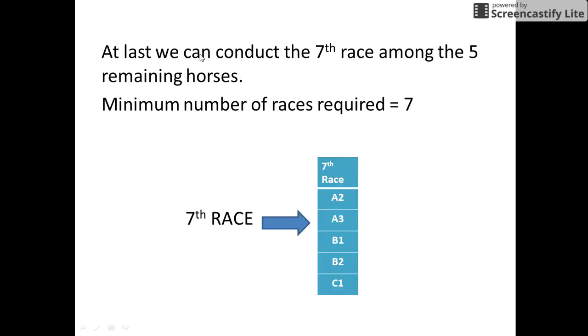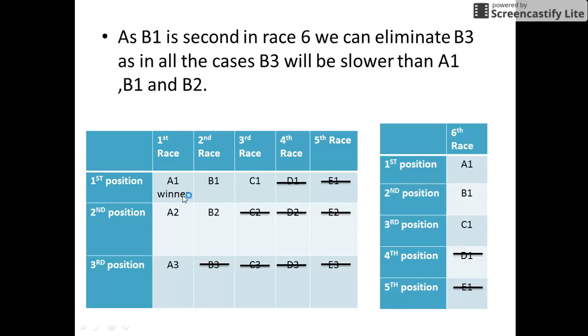So, at last, we conduct the seventh race among the five remaining horses as shown in the previous slide. They were B1, B2, C1, A2 and A3.